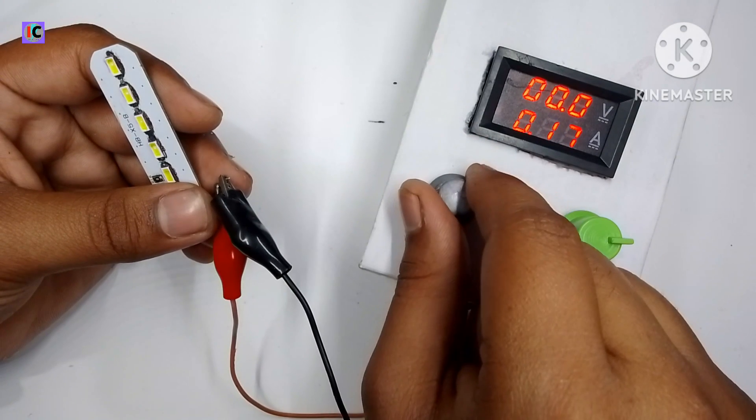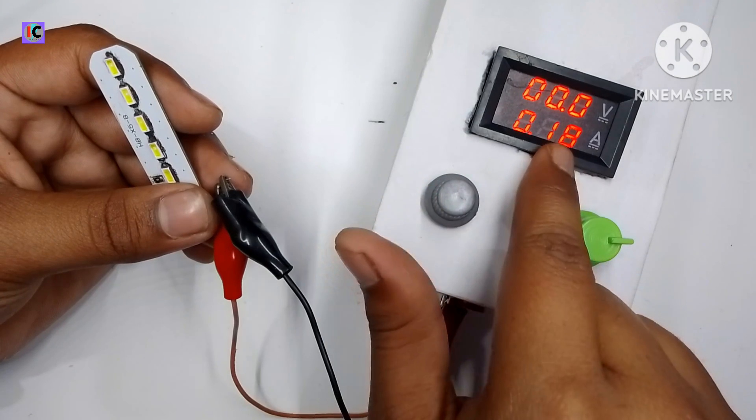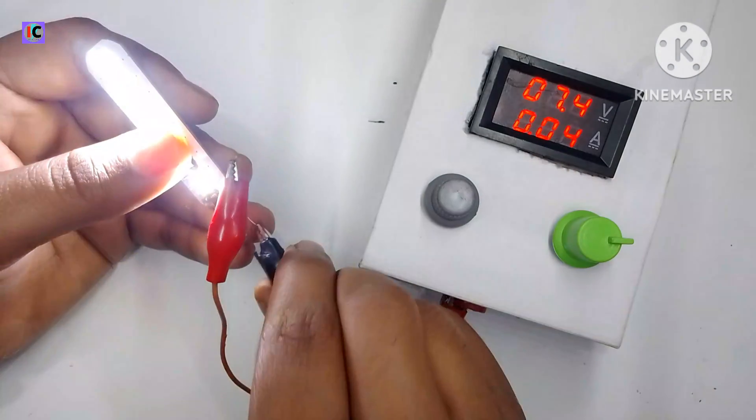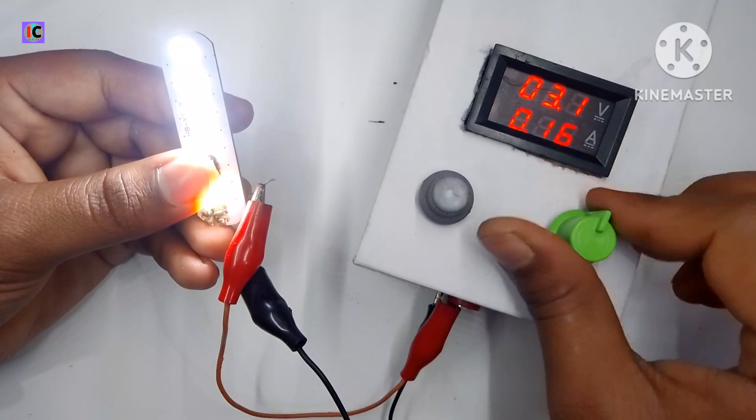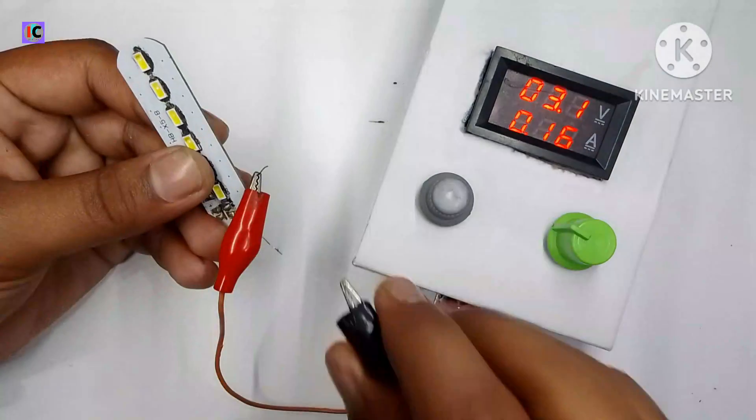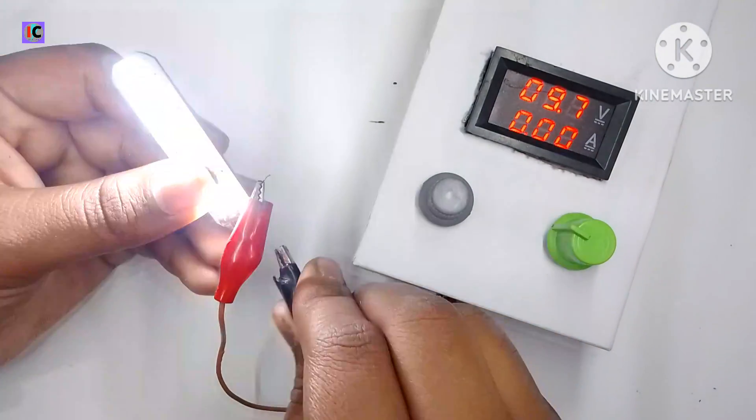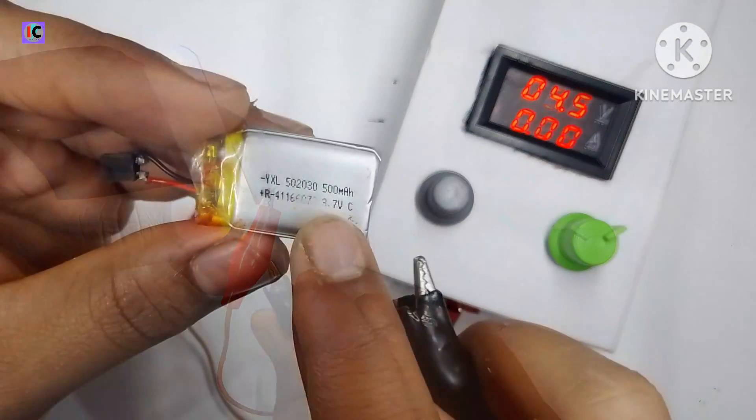Now here you can see I have set the output current at 0.18 ampere which is 180 milliampere. And you can see the voltage knob is not working because the current limit is activated.